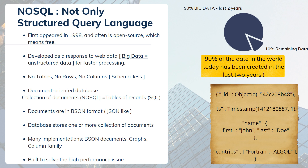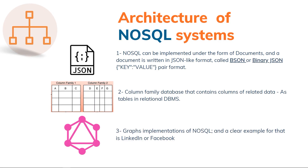NoSQL can be implemented as documents, which look like JavaScript objects or JSON, but are actually BSON — Binary JSON — which has more additional data types. There are also column-family databases containing columns of related data with key-value pairs. Finally, there are graph implementations, like LinkedIn or Facebook, where you have friends and friends of friends. Graph databases are very suitable for such representations. All three forms rely on key-value stores, so you need to know the key you're looking for when performing a query.